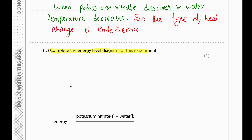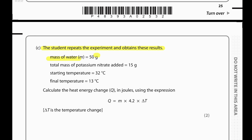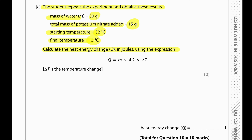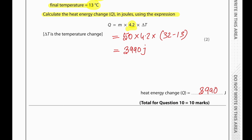Complete the energy level diagram: since this is an endothermic reaction, the products (potassium nitrate solution) are at a higher energy level than the reactants. The student repeats the experiment: 50 g water, 15 g potassium nitrate total, starting temperature 32°C, final temperature 13°C. Heat energy change using q = mcΔT: q = 50 × 4.2 × (32 − 13) = 50 × 4.2 × 19 = 3990 J.